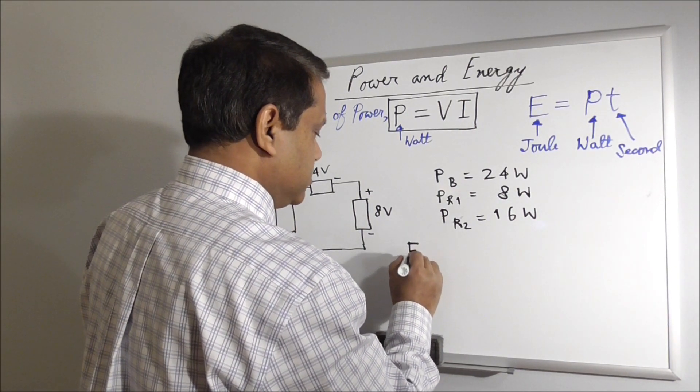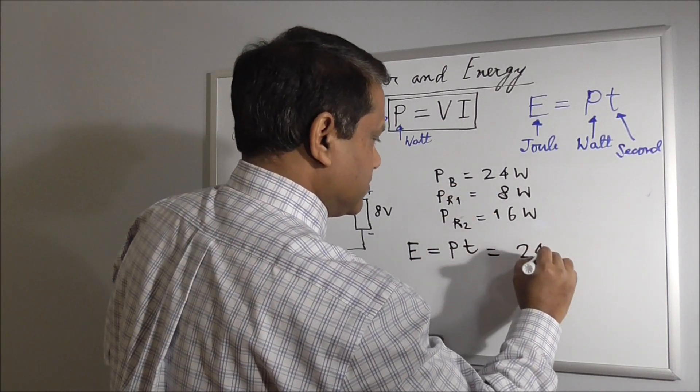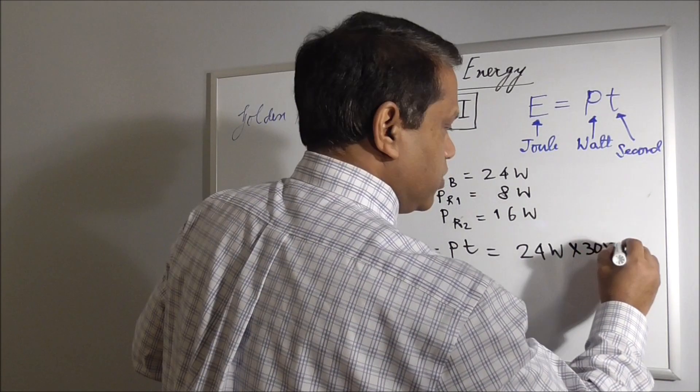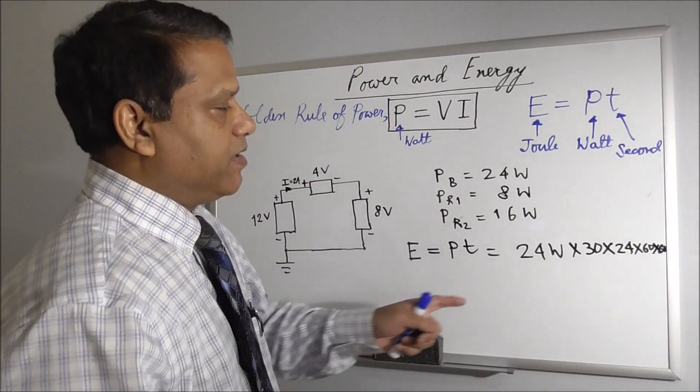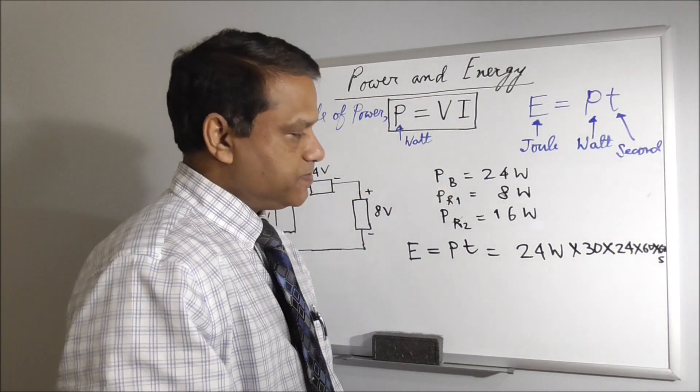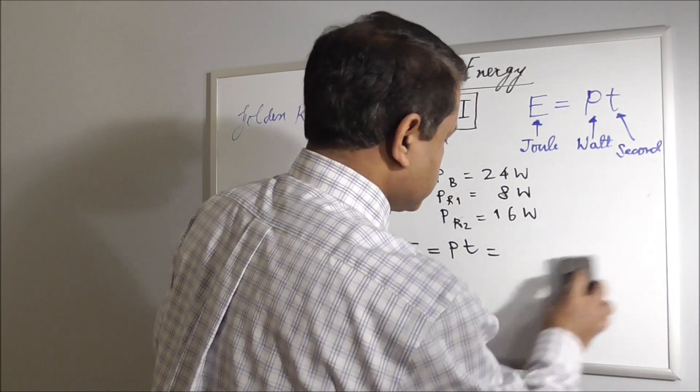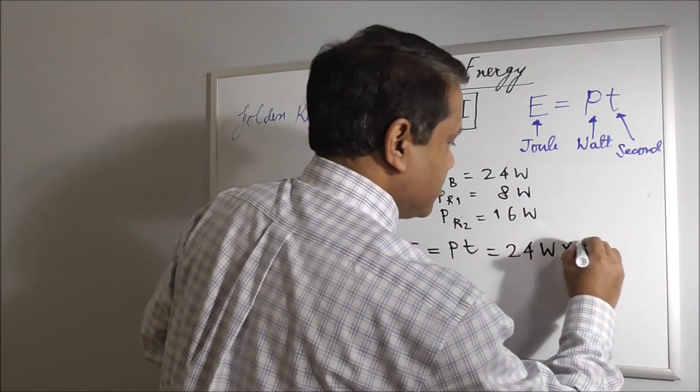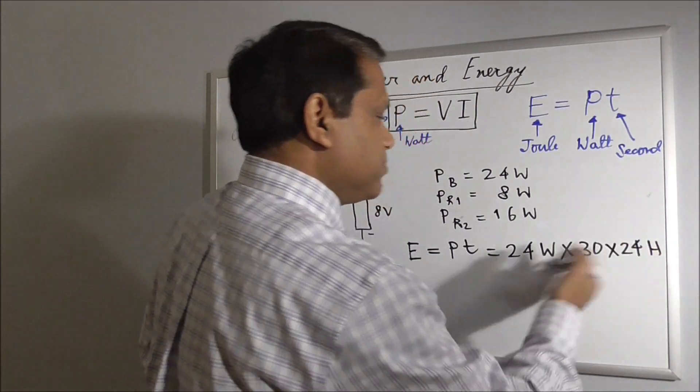So what will be the total energy? Energy will be E equals power times time. And power is 24 watt. And time is one month, that is in seconds it will be 30 days times 24 hours. Each hour is 60 minutes and each minute has 60 seconds. So this many watt seconds, and watt second is joule. But we will not go into joule here. We will remain in kilowatt hour. So power is 24 watt, and 30 days, and each day has 24 hours.